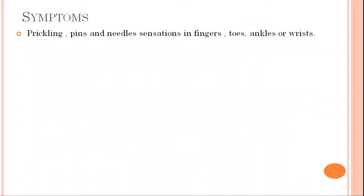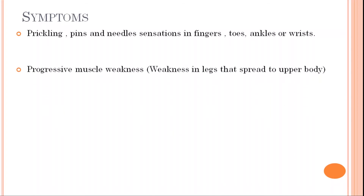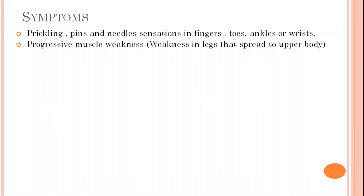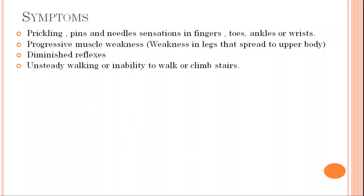Now, the symptoms. First symptom is pricking, pins, or needle sensation in fingers, toes, ankles, or wrists. Second is progressive muscle weakness — weakness starts in the legs and then spreads to the upper body. Third is diminished reflexes. Fourth is unsteady walking or inability to walk or climb stairs, which occurs due to muscle weakness.